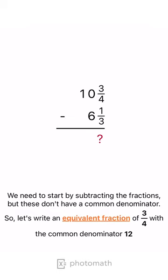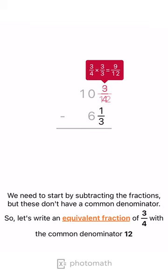We need to start by subtracting the fractions, but these don't have a common denominator. So, let's write an equivalent fraction of 3 quarters with the common denominator 12.